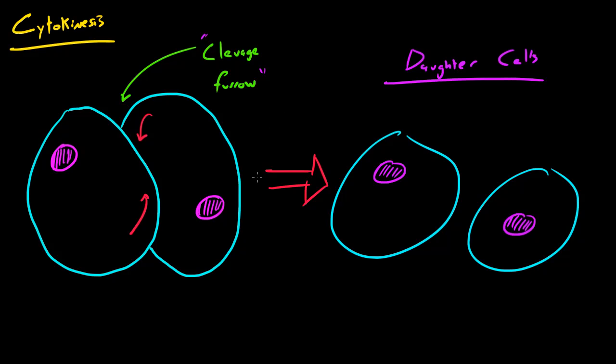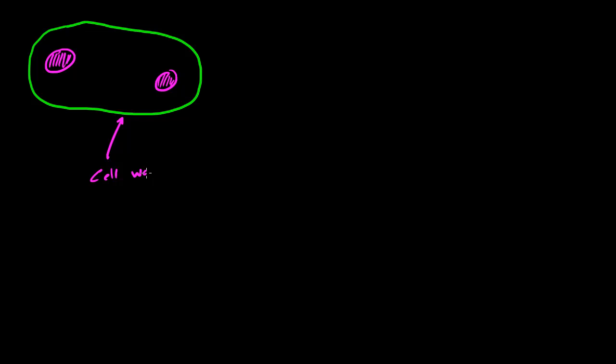Whenever we think of cytokinesis this is pretty much what we picture in our head. Remember, that was the process in animal cells. However, plant cells are a little bit different. When a plant cell is ready to undergo cytokinesis we have the original cell with two nuclei. But we can't have proteins that squeeze the cell together like in animal cells because of the cell wall, which is very structured and rigid. If the proteins tried to squeeze it together it couldn't because it's so rigid.